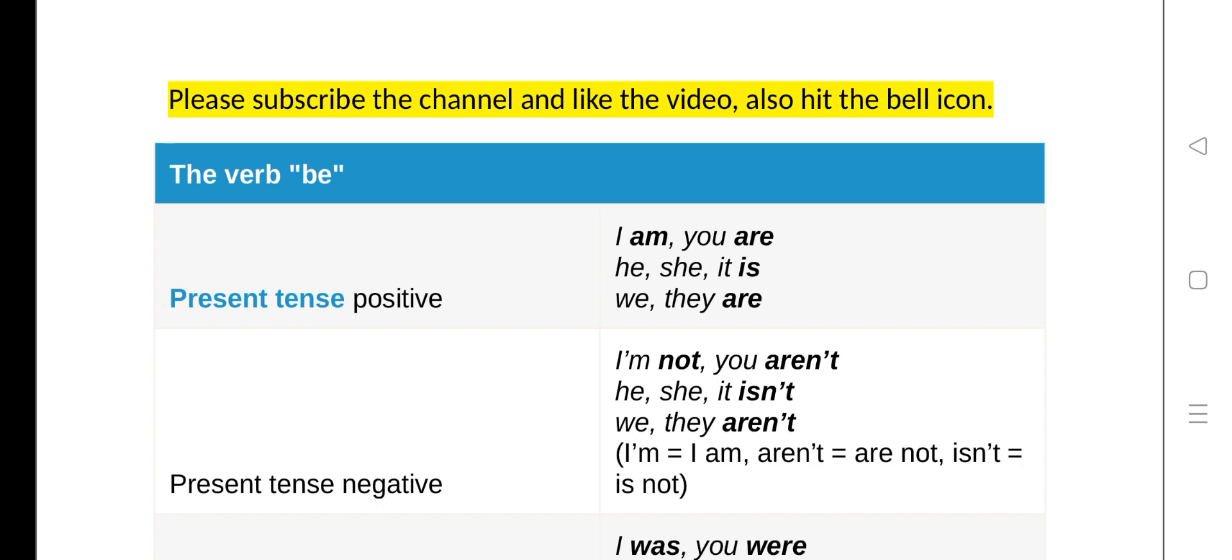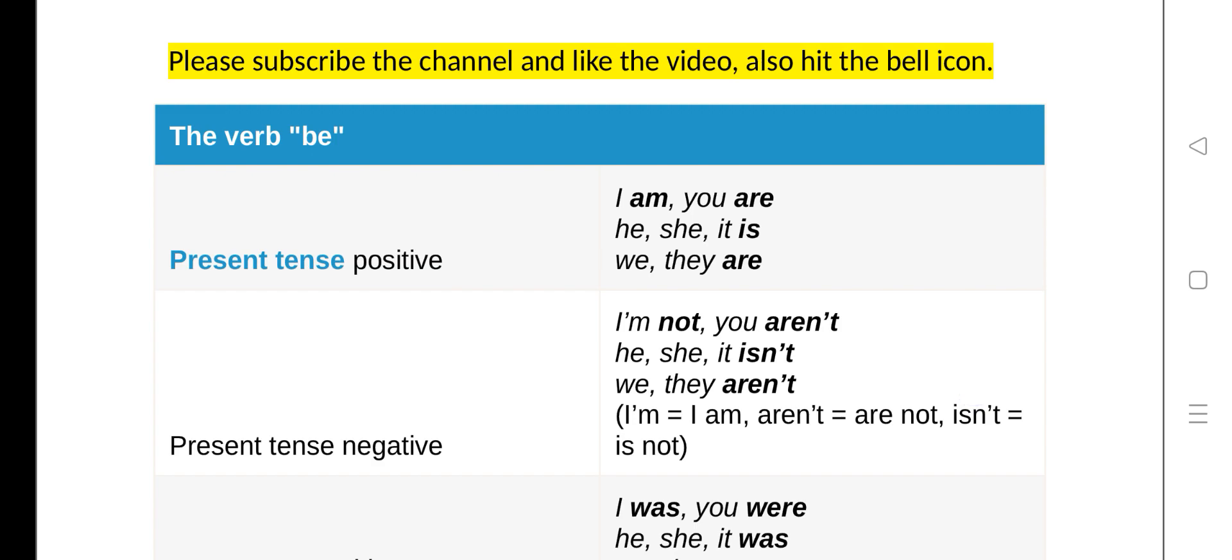To go to the examples, first you have to learn what verb 'be' is. Verb 'be' is actually am, are, is, was, were, will, etc. So let's start now with how to use verb 'be' in the present tense positive.